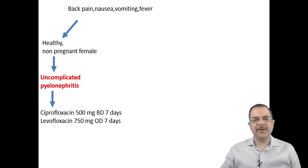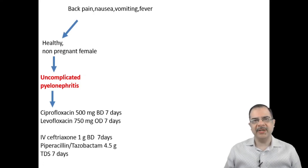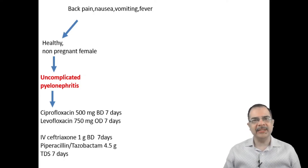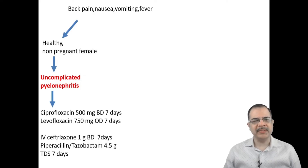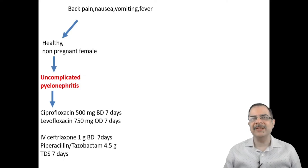If symptoms are severe, we can start IV antibiotics. IV ceftriaxone 1 gram twice a day for 7 days, or piperacillin-tazobactam 4.5 grams three times a day for 7 days. This injectable therapy is reserved for patients with severe symptoms.